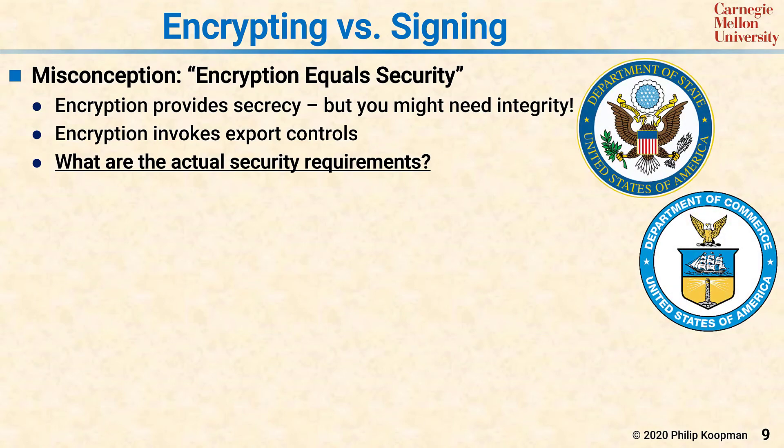It's common for designers to say, I need security, so that means I need encryption, because they think encryption always equals security. That's not always the best move. Encryption provides secrecy, but secrecy might or might not be what you really care about. Secrecy is nice if you can get it, but sometimes the cost is too high.